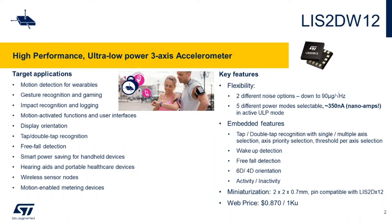The LIS2DW12 is one of the most flexible accelerometers in the market, featuring two different noise options and five different power modes that can dynamically be programmed. The device can reach ultra-low power consumption values close to 350 nanoamps and still be active sensing motion.